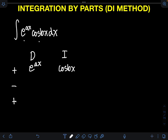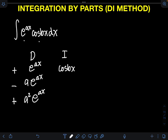Let's differentiate e raised to ax first. Applying the chain rule, the derivative of e raised to ax is e raised to ax times the derivative of ax, which is simply A. Differentiating again, we get e raised to ax times A again, giving us A squared times e raised to ax.